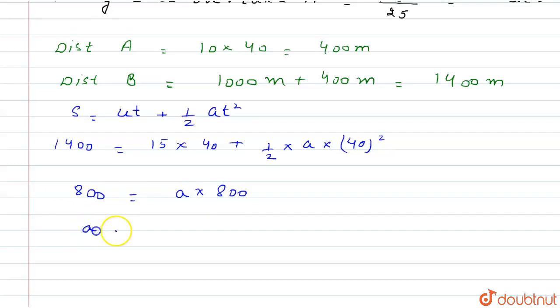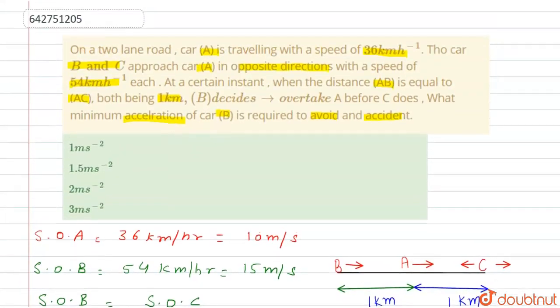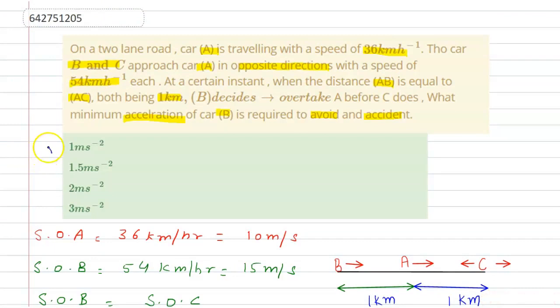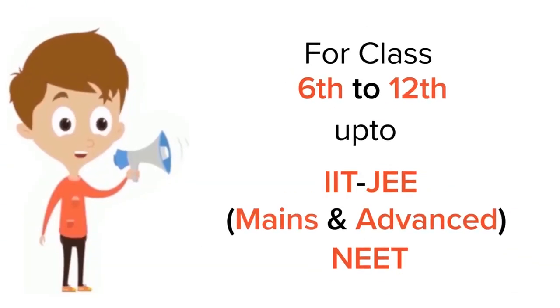The value of acceleration is equal to 1 m/s². This is the value of a. Now check the option, so the first option is correct. Thank you. For class 6 to 12, IIT-JEE and NEET level, trusted by more than 5 crore students, download Doubtnet app today.